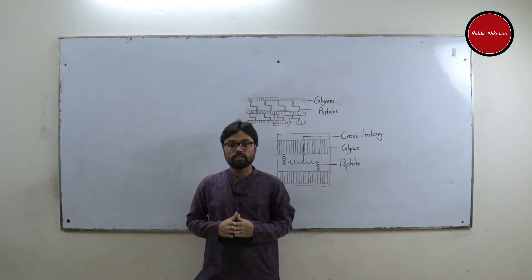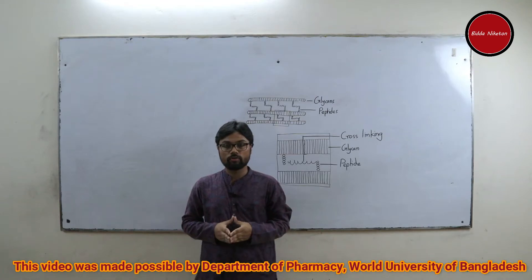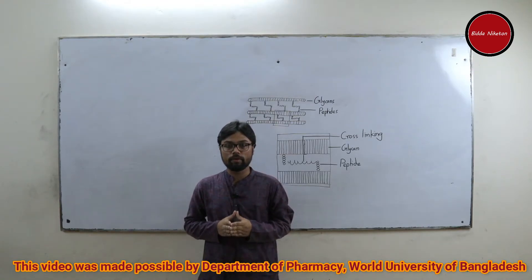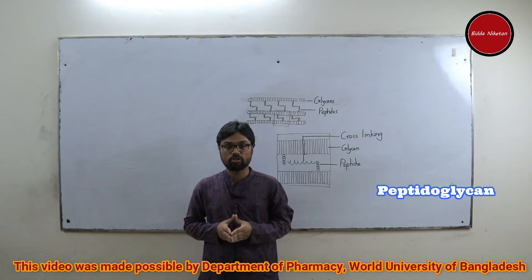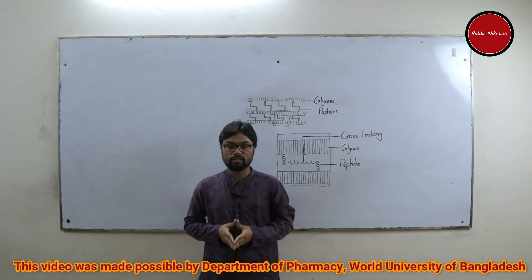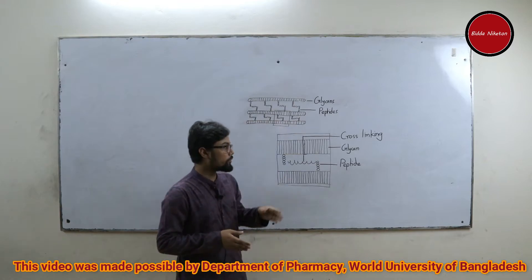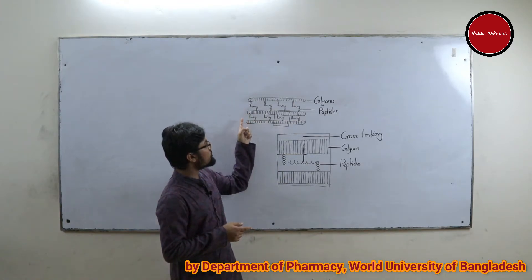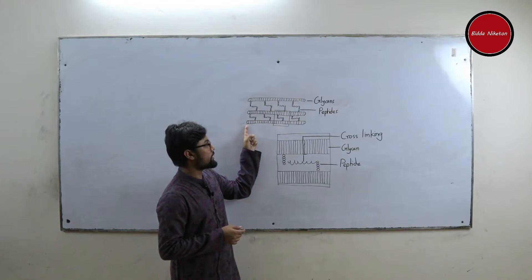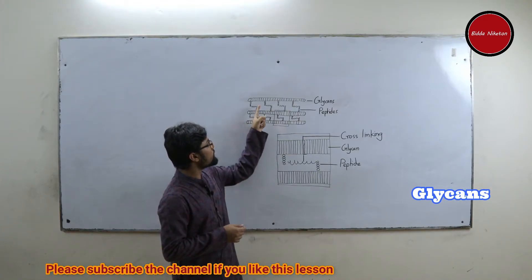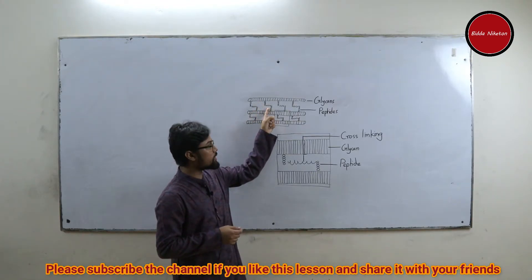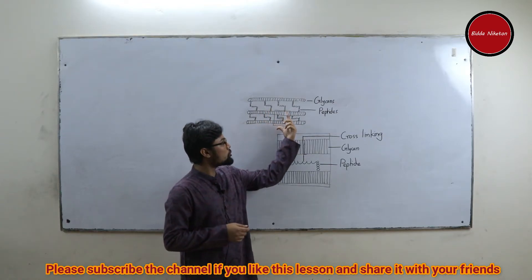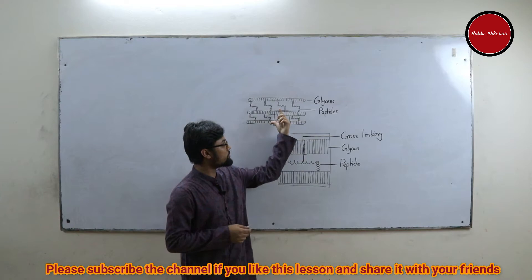Before we can proceed any further, we must know about the bacterial cell wall. The bacterial cell wall is made up of peptidoglycans, which is essentially a mixture of glycans and peptides. In this figure, we can see the tube-like structures — these are called the glycans — while the rope-like or chain-like structures are called peptides. Here is a more zoomed-in version of this figure.